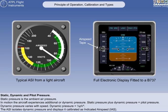So, if dynamic pressure can be isolated from the total or pitot pressure, it can be used to indicate airspeed. The function of the airspeed indicator therefore is to isolate the dynamic pressure from the pitot pressure, and to display the dynamic pressure calibrated as airspeed. The airspeed displayed on the airspeed indicator is known as the indicated airspeed, or IAS.